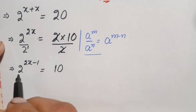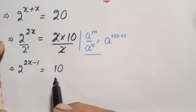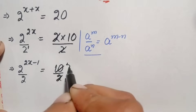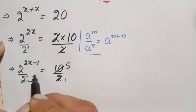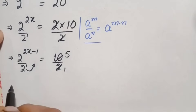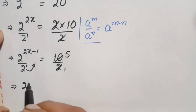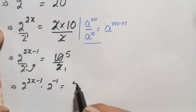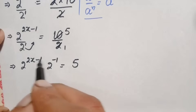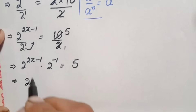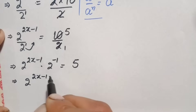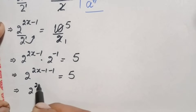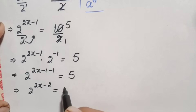Here there is 2 and there is 10, so these two numbers are again divisible by 2. Dividing both sides again by 2 gives 2 times 5 is 10, and moving the denominator 2 to the numerator changes its power sign to negative 1. So this becomes 2 raised to power 2x minus 1 times 2 raised to power negative 1 is equal to 5. Since the bases are the same, we add the powers: 2 raised to power 2x minus 1 minus 1, which simplifies to 2 raised to power 2x minus 2, is equal to 5.